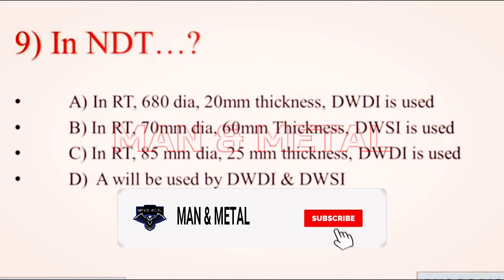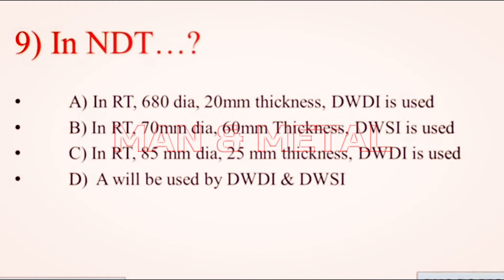Question 9: In NDT: a) in RT, 680mm diameter, 20mm thickness, DWDI is used; b) in RT, 70mm diameter, 60mm thickness, DWSI is used; c) in RT, 85mm diameter, 25mm thickness, DWDI is used; d) both DWDI and DWSI will be used.